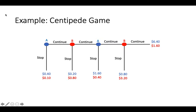In the centipede game, play alternates between two players, Player A and Player B. At each player's turn, they get the opportunity to either stop the game or continue to the next round. As you can see from the payoffs, which are color-coded, if a player stops, they get more money than if they choose to continue and their opponent stops the game on the next round. However, if they continue and then their opponent continues as well, they have the potential to increase their earnings.